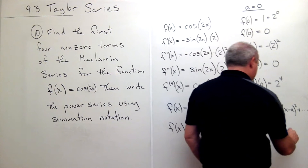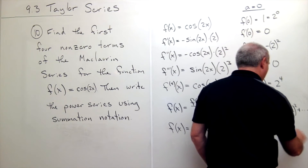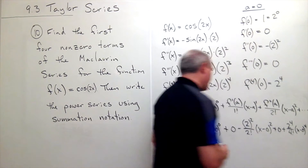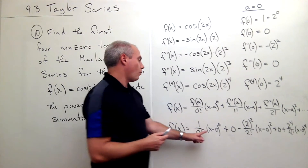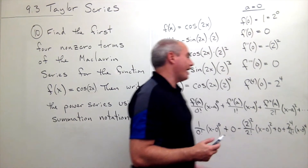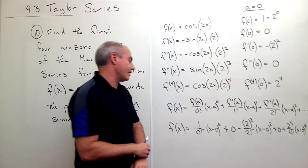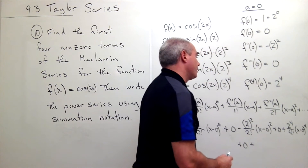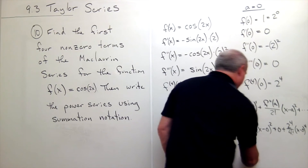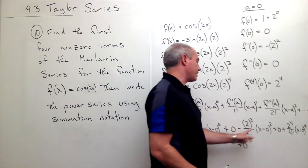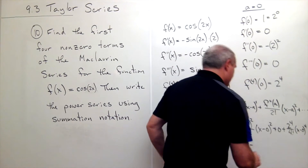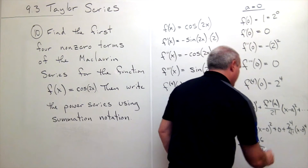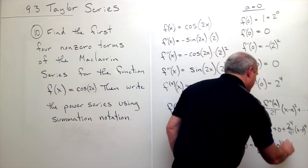Then the next term is zero. After that we get plus 2 to the fourth over four factorial times x minus zero to the fourth. That gives us three positive terms so far. The fourth non-zero term would be negative 2 to the sixth over six factorial times x minus zero to the sixth.